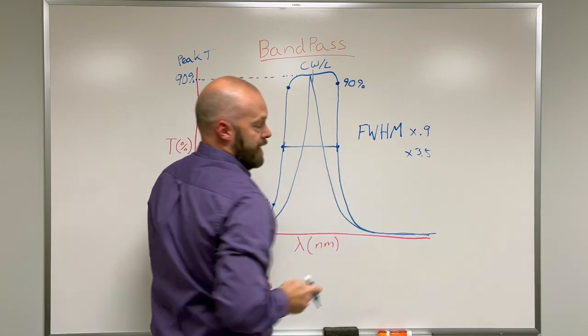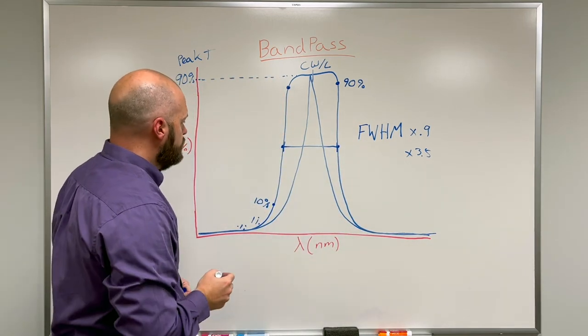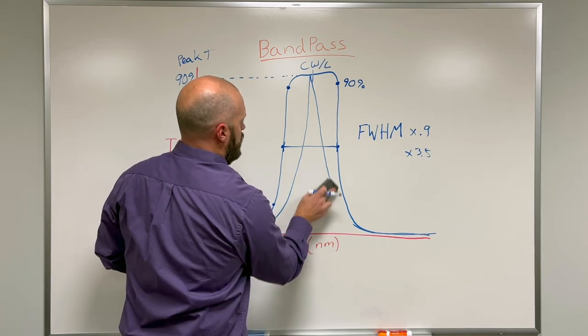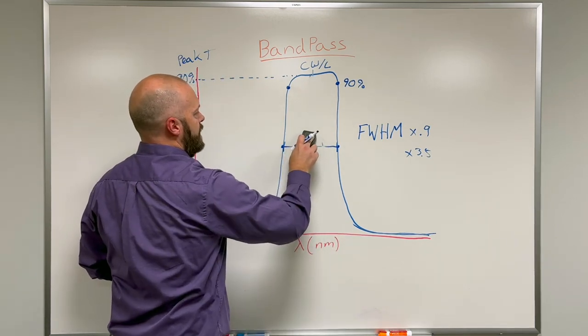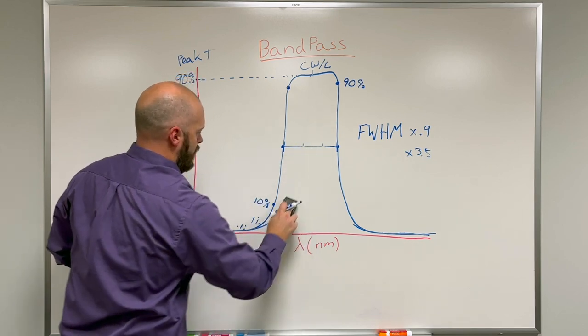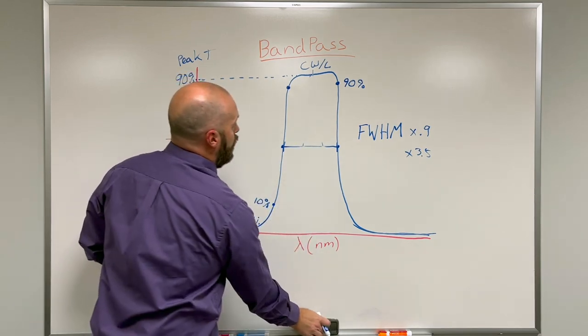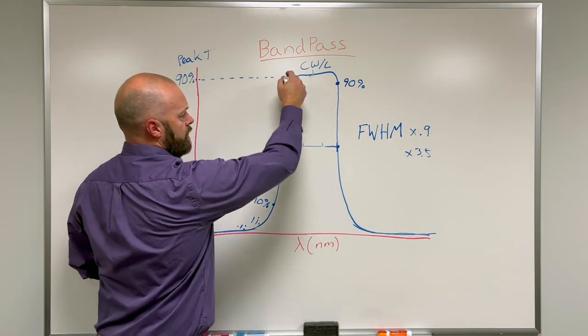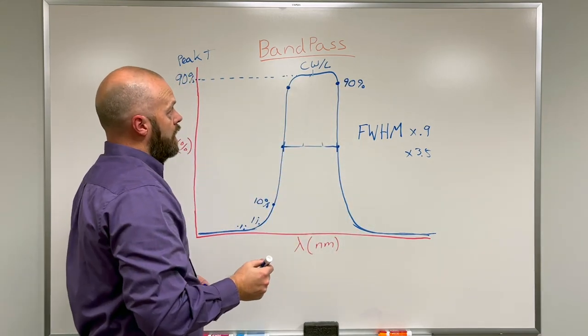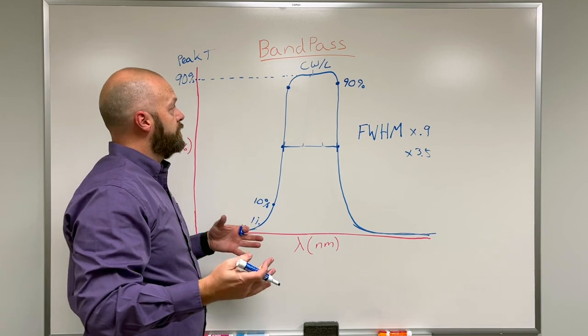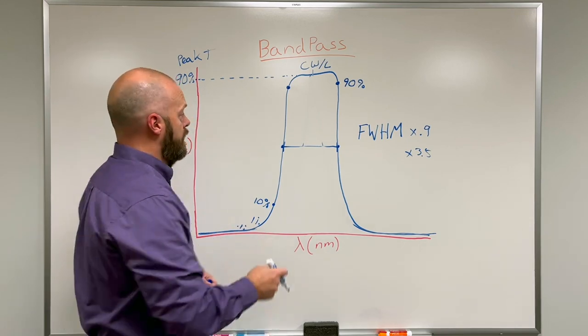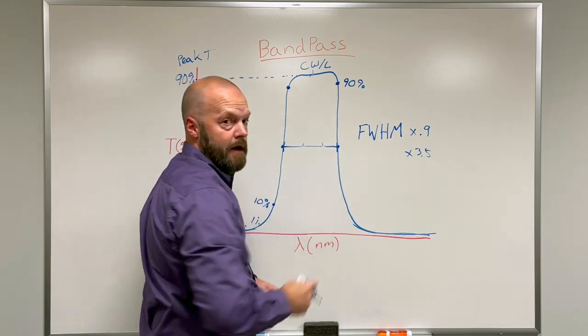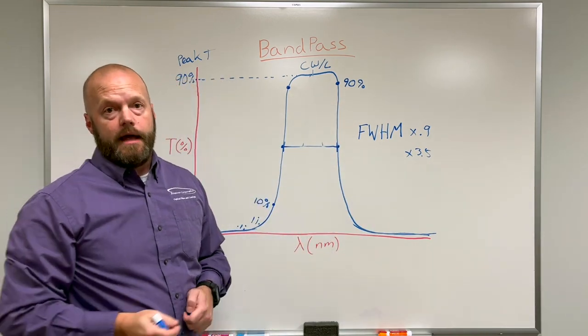As we shape the number of cavities in a bandpass design, we will pull in steeper and steeper edges. The one I've drawn here represents a typical three to five cavity design. Once you get to steeper edges I won't be able to draw exactly how that looks, but you can see the factors in the catalog.